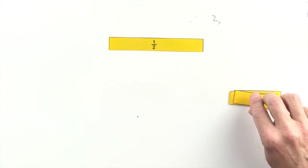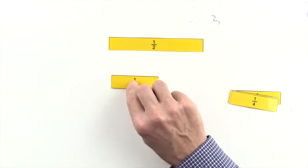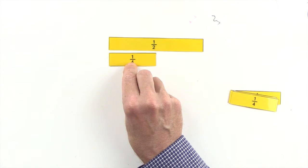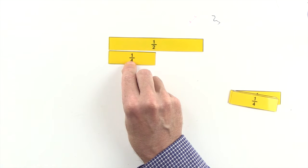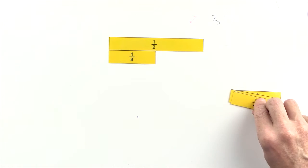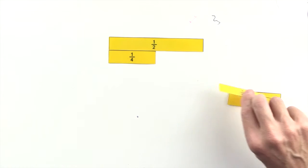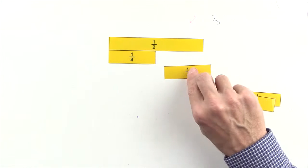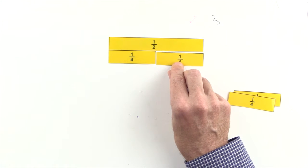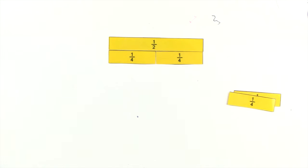Let's try quarters. One quarter is less than one half, but two quarters are equal to one half. So two quarters and one half are equivalent fractions.